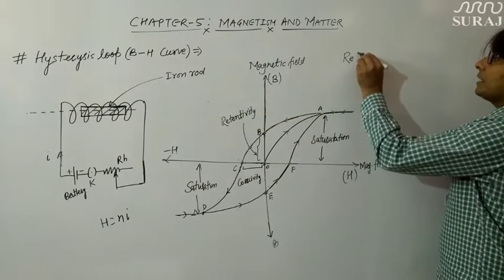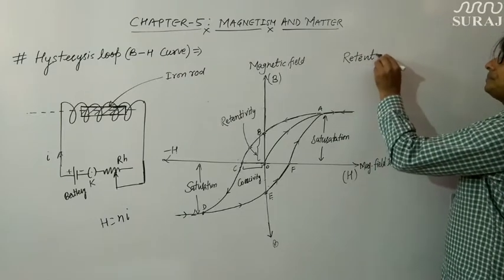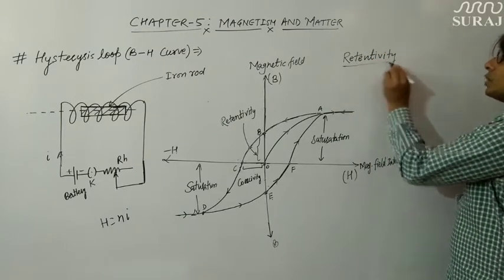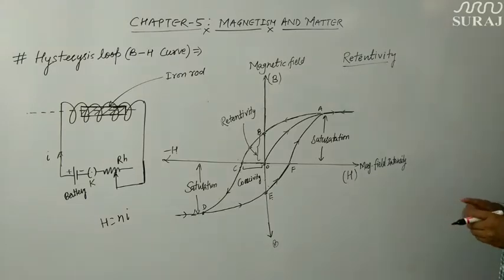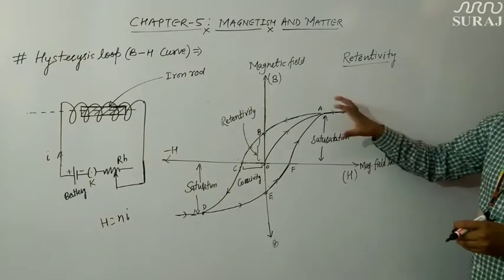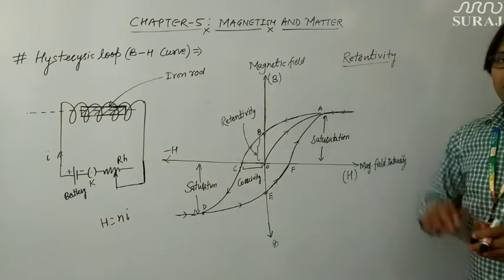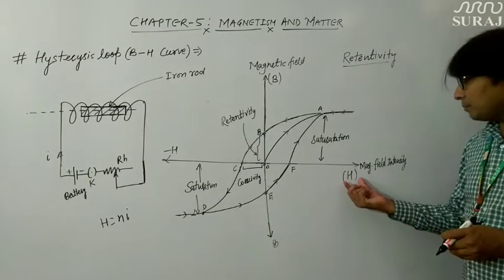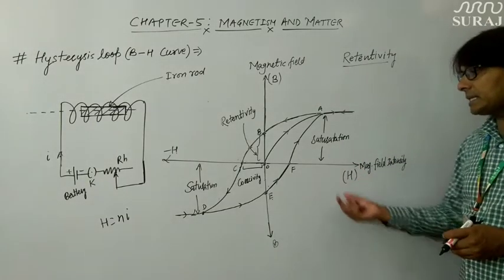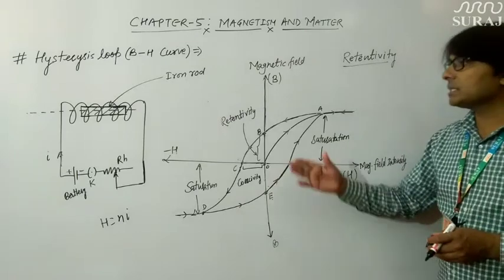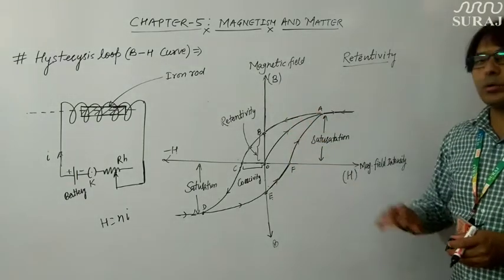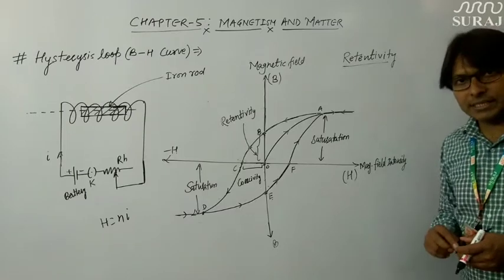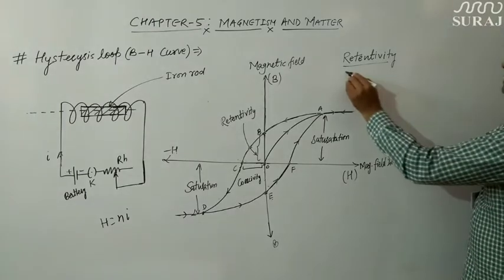Now note down the definitions of these important terms. Retentivity is defined as the value of magnetic field when the value of magnetic field intensity becomes zero, once the iron rod or magnetic material has been magnetized. It is also known as residual magnetism or remanence, and in this graph it is denoted by OP. Coercivity, denoted by OC, is the value of H at which the magnetic field of the iron rod becomes zero. These are important terms frequently asked in exams.